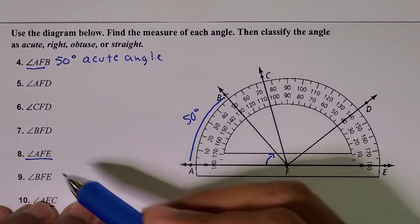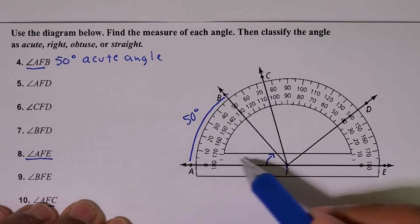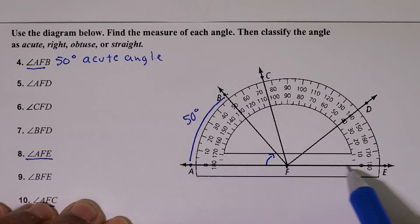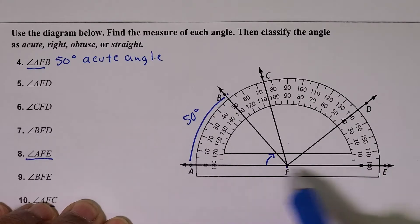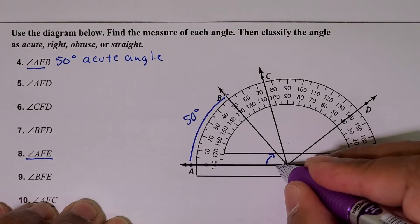Let's go on to the next problem. AFE—A, F, E. Well, this seems to be just a straight angle because you're going from here, and I'm going to use a different color for this one, it's going all the way from here to here.